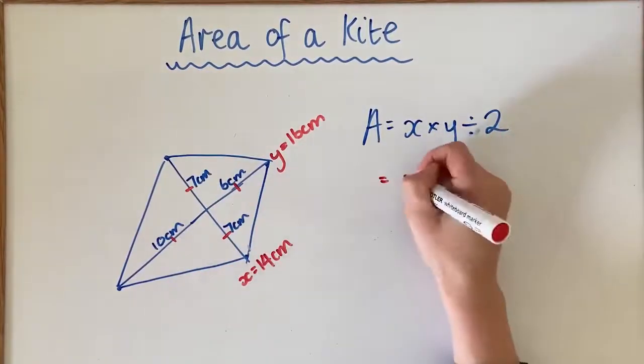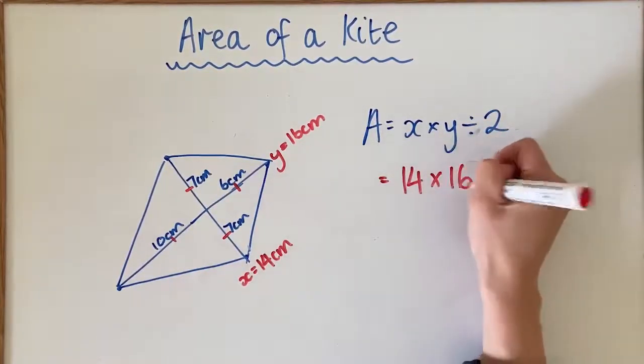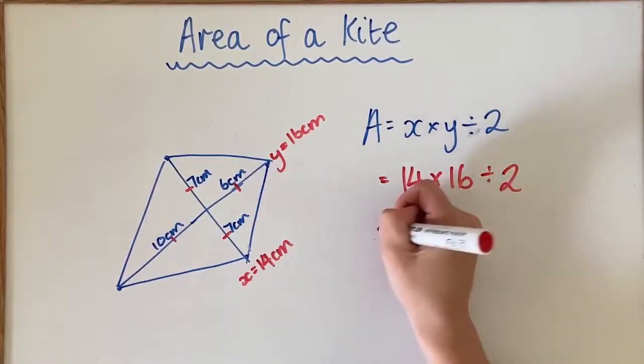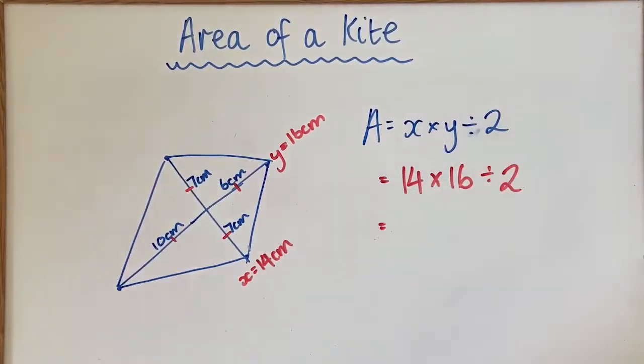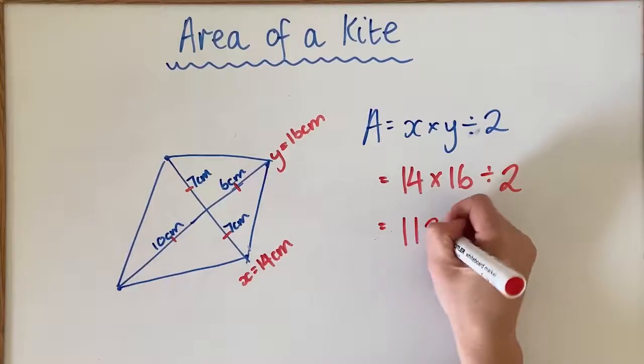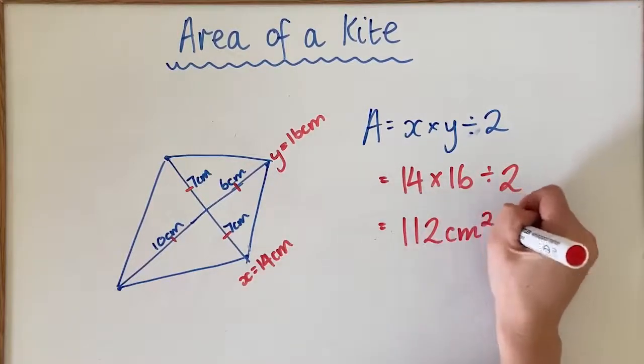So for this formula, I'm going to go 14 times 16 divided by 2, and if I type that into my calculator, I'm going to get 112 centimeters squared.